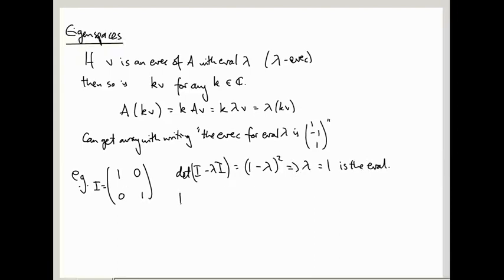What are the eigenvectors? Well, identity times v equals lambda times v, so equals 1 times v. This is true for any v. So actually, the general solution of the general eigenvector with eigenvalue 1 is x, y. It has two free parameters, not just one. So this is an eigenplane, not just an eigenline. There's a whole plane of solutions. Any vector in the plane is an eigenvector with eigenvalue 1.